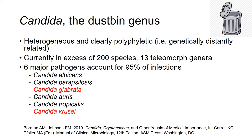Candida could be known as the dustbin genus, because really the genus is heterogeneous and clearly polyphyletic, which means that the species within the genus are genetically distantly related. Currently there are in excess of 200 species and 13 telomorph genera. But as you all know, there are six major pathogens responsible for the vast majority of infections: albicans, parapsilosis, glabrata, auris, tropicalis, and krusei.